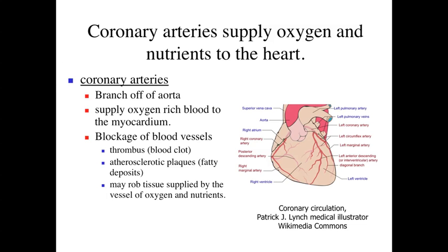If you disrupt that blood flow — if you have blockage of these blood vessels with a blood clot, called a thrombus, or plaque buildup from fatty deposits in atherosclerosis — you interfere with the delivery of oxygen and nutrients to cardiac muscle cells. The cardiac muscle cells become starved for oxygen and nutrients, and in some cases they can actually die, contributing to a heart attack. So it's important that these coronary arteries coming from the outside, analogous to our vasa vasorum, are delivering oxygen and nutrients primarily to our cardiac muscle cells within the myocardium.